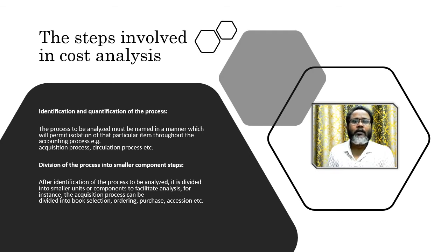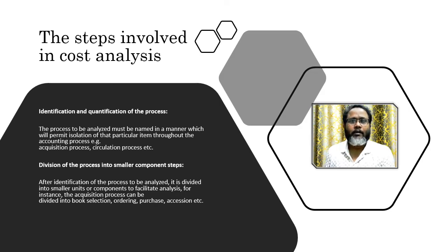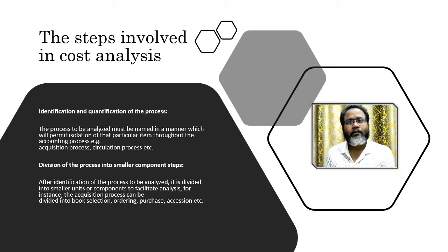The steps involved in cost and benefit analysis are as follows. The first and foremost is identification and qualification of the process. The process you are going to apply for financial estimation must be analyzed and named in a manner that permits isolation of the particular item throughout the accounting process. Each and every budget head should be assessed differently.